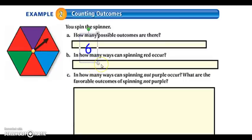How many ways can spinning red occur? So I want to again reference my spinner. Six sections. Out of those six, three of them are red. So there's three different ways I could spin red.